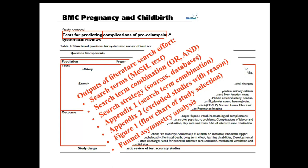It is also considered good practice to include a list of excluded studies, giving the reason as to why they were excluded. This can be presented as an appendix and Figure 1, which is a flow chart of the study selection. And then some assessment of the risk of publication bias and related biases — I demonstrated how a funnel plot may be created and its asymmetry assessed.